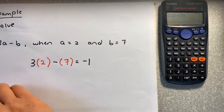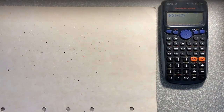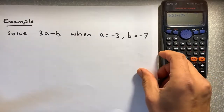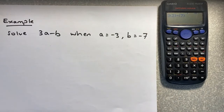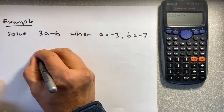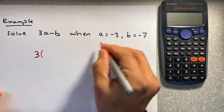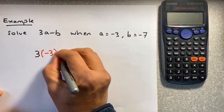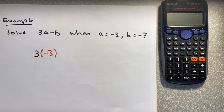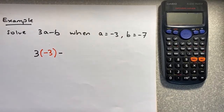We do another example — the same expression with different numbers now. If we have the same question, 3a minus b, and you know that a is minus 3, and b is minus 7. You put a 3 there. Instead of a, you're going to put a bracket and replace it with minus 3. And then you're going to minus — the minus sign is still there — and instead of b, you're going to put minus 7.